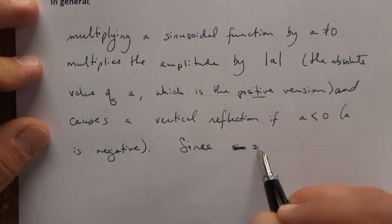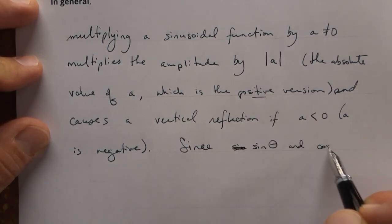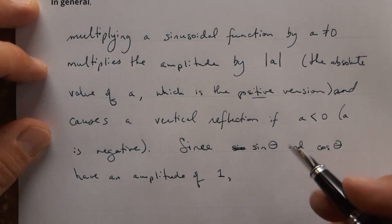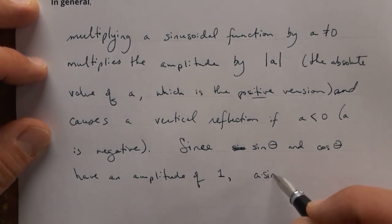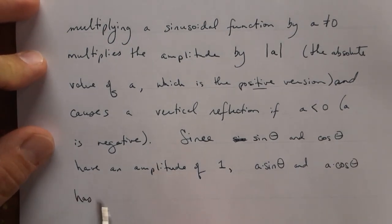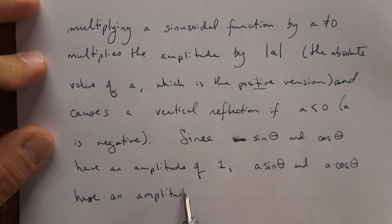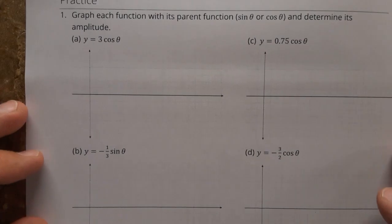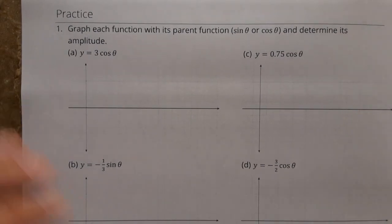Now here's a key point. Since sine of theta and cosine of theta have an amplitude of 1, a times sine theta and a times cosine theta have an amplitude of the absolute value of a.